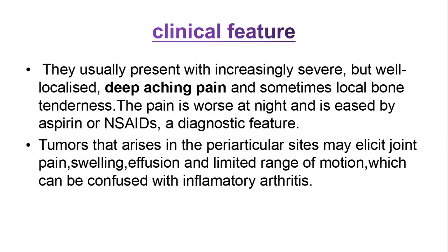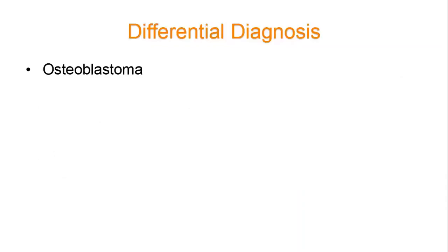These periarticular presentations can be confused with inflammatory arthritis. Unless confirmed radiographically or with other findings, it can be difficult to conclude that the tumour is osteoid osteoma. For differential diagnosis, it could be osteoblastoma or inflammatory arthritis based on clinical findings alone.